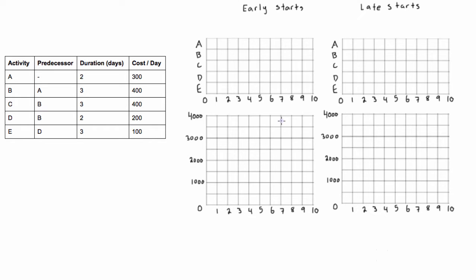In this video we are comparing the baseline curves, which are the project S curves for the early starts and the late starts for the same project. First, let's go through the Gantt chart for the early starts — we can read that right off the table of dependencies. Activity A goes from 0 to 2, B depends on A and is 3 days, C depends on B and is 3 days, D depends on B and is 2 days long, and E depends on D and is 3 days.